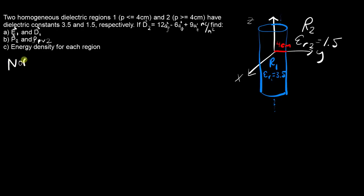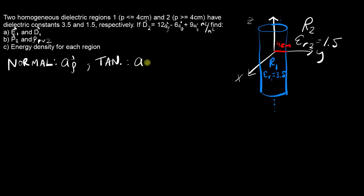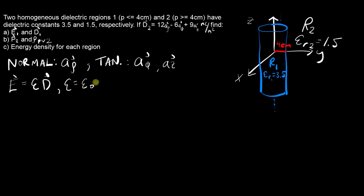The first thing is to identify what direction is normal to this region boundary. This region boundary is just the side surface of the cylinder, and the unit vector normal to that — what cuts right through it — would be anything in the a-rho direction. The tangential component will be anything in the other two directions, a-phi and a-z in cylindrical coordinates.